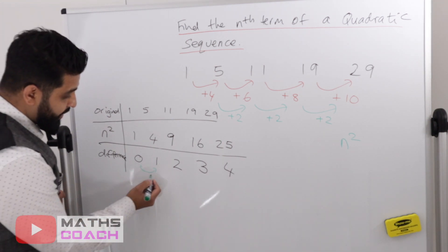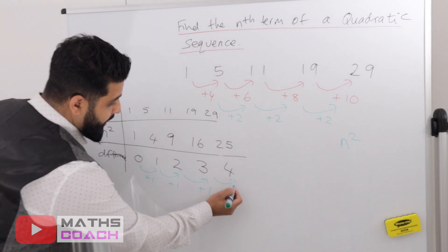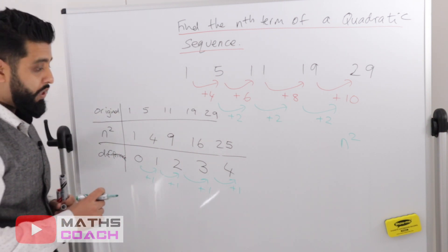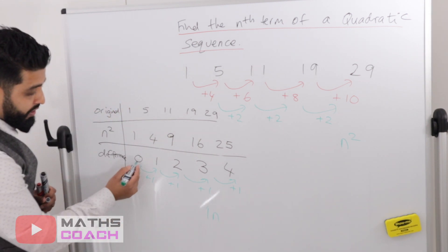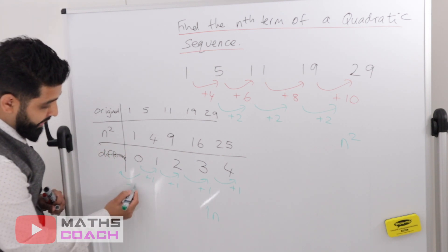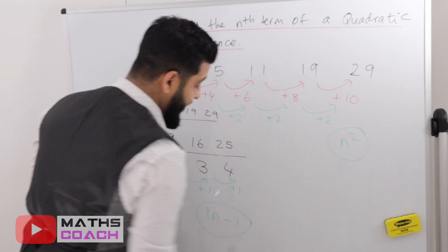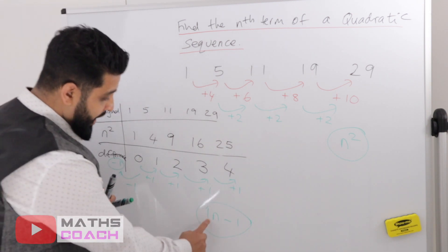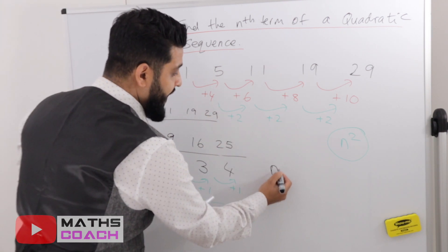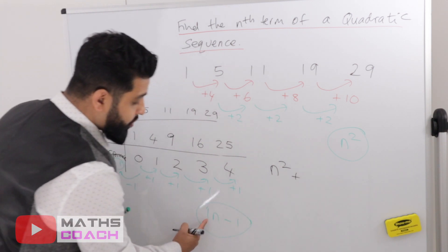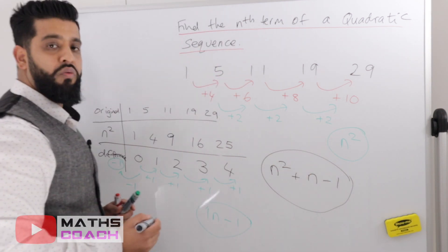This new sequence should follow what you'd do for a linear sequence. The difference is add one each time. Referring back to linear sequences, you write 1n, then go backwards from the first term by doing minus one — so zero minus one is minus one. You add minus one to give the linear part.